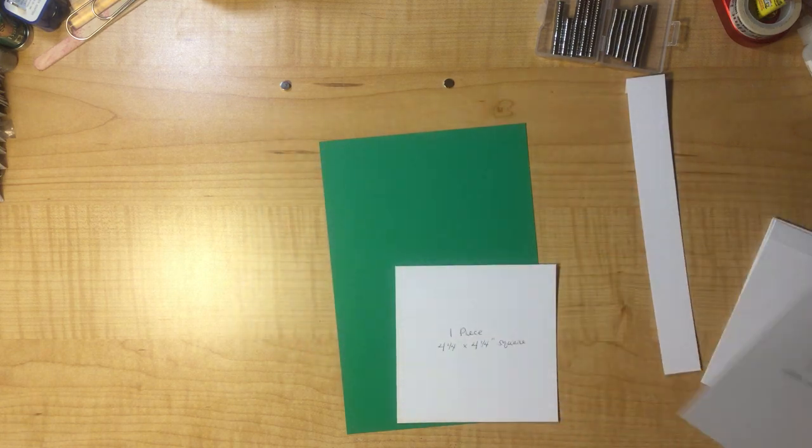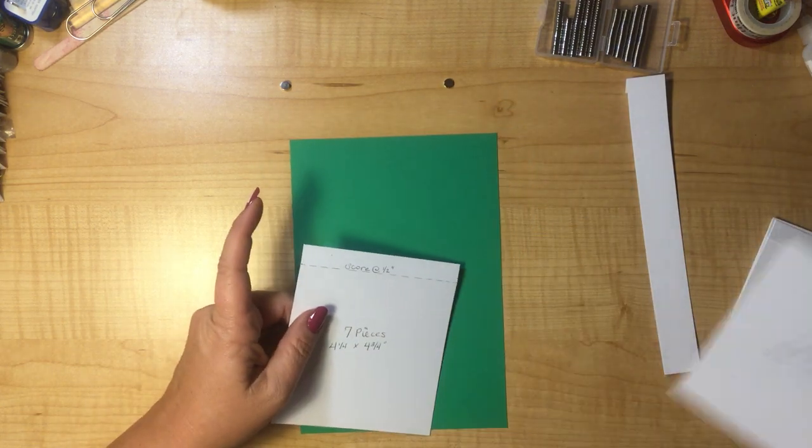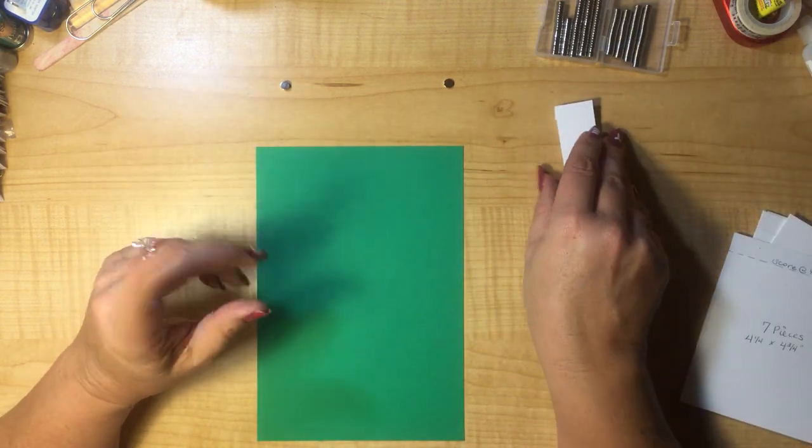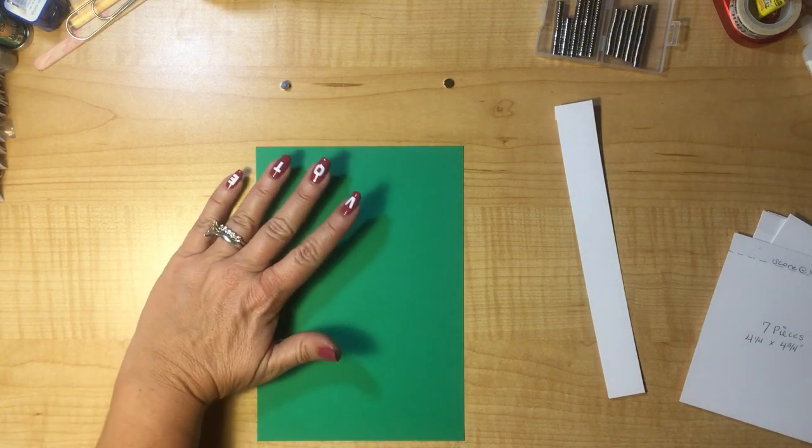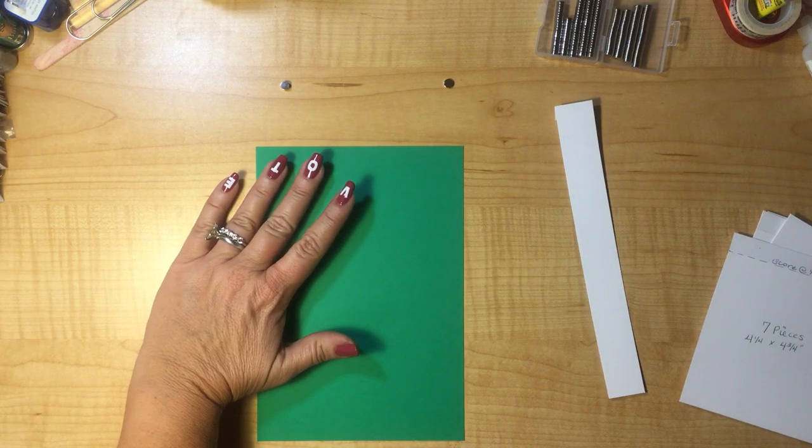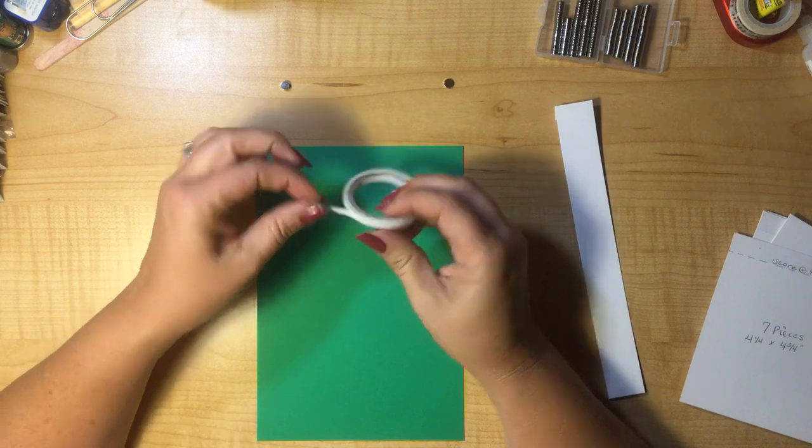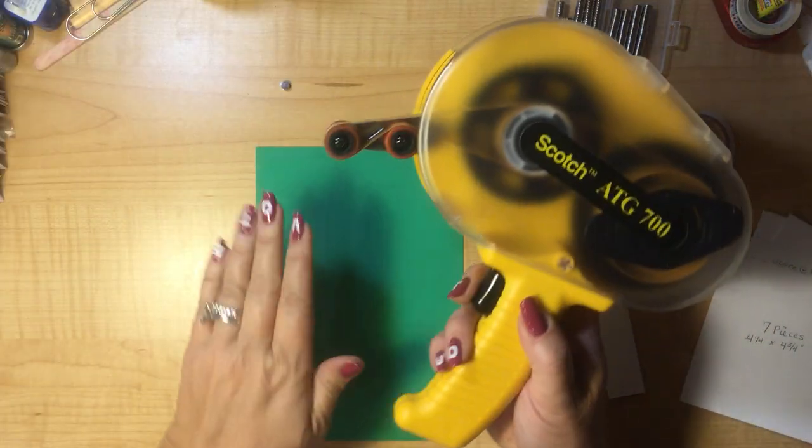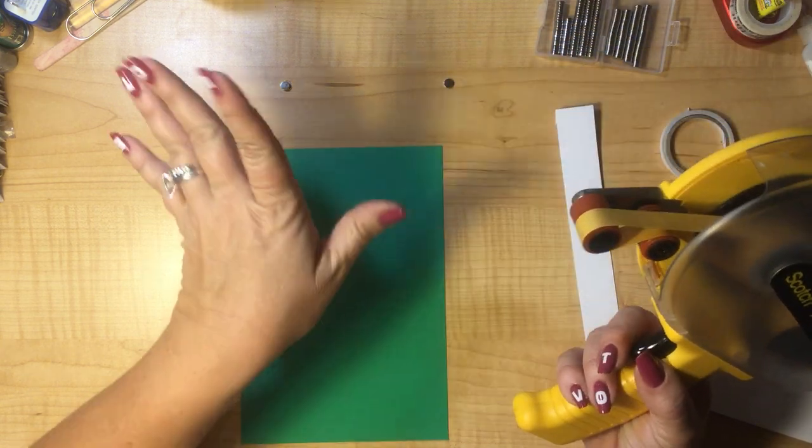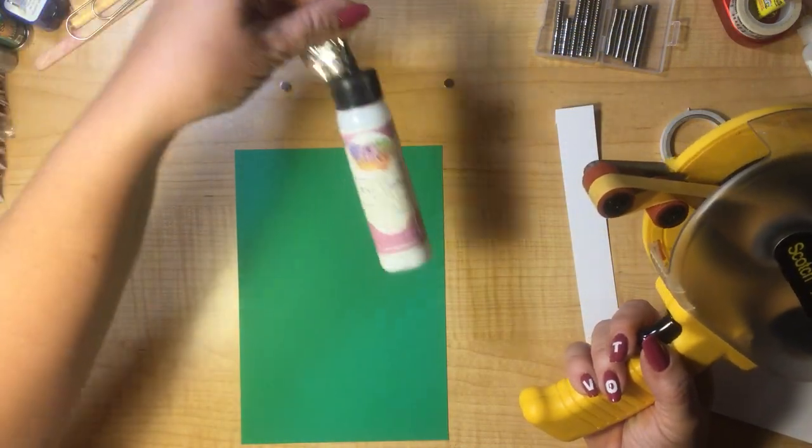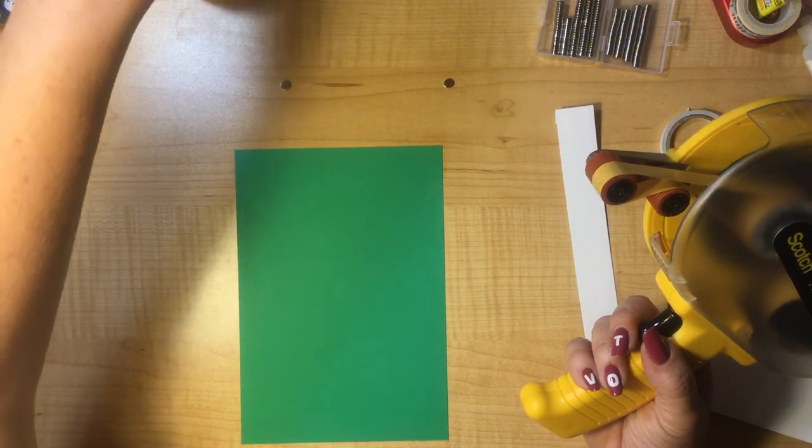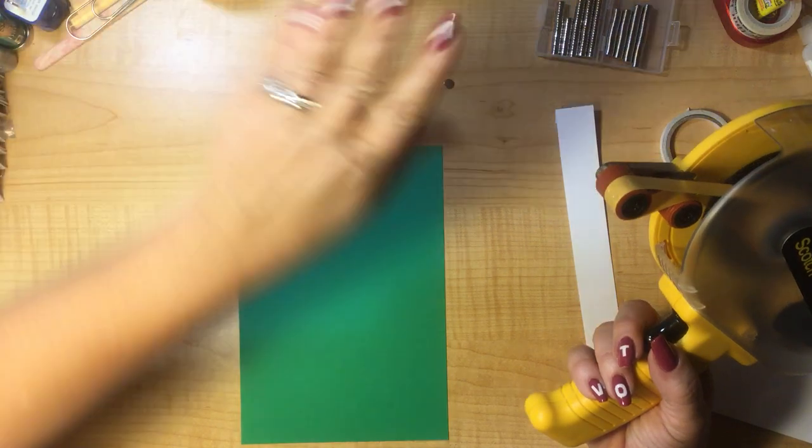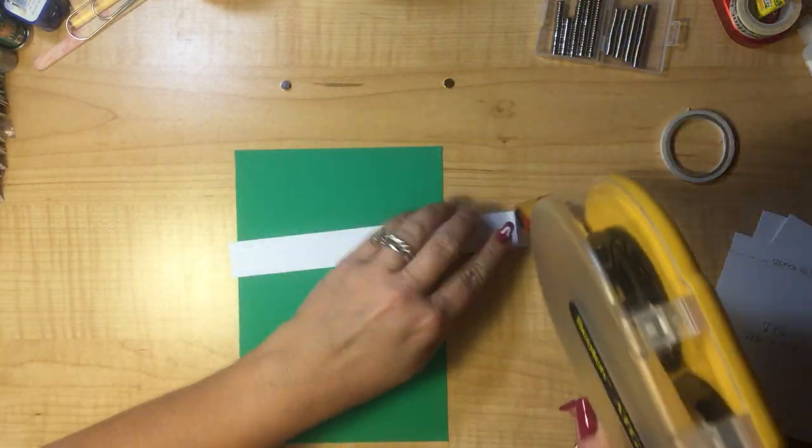Then the easy and fun part comes—getting to put it all together. You can use any kind of strong adhesive: tape adhesive, double-sided sticky tape, your ATG gun, wet glue, art glitter glue, your beacon three-in-one. This is my favorite, but lots of different options. For the video, I'm just going to use a little bit of ATG.